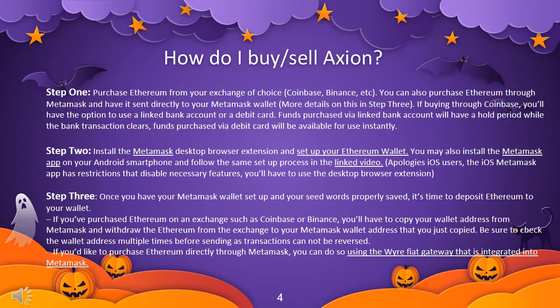Step 1: Purchase Ethereum from your exchange of choice — Coinbase, Binance, etc. You can also purchase Ethereum through Metamask and have it sent directly to your Metamask wallet. If buying through Coinbase, you'll have the option to use a linked bank account or a debit card. Funds purchased via linked bank account will have a hold period while the bank transaction clears; funds purchased via debit card will be available for use instantly.